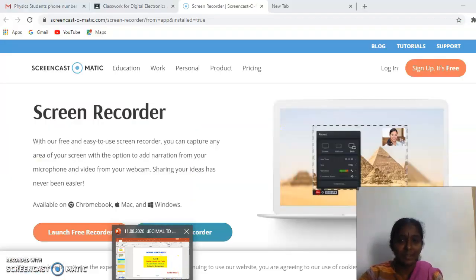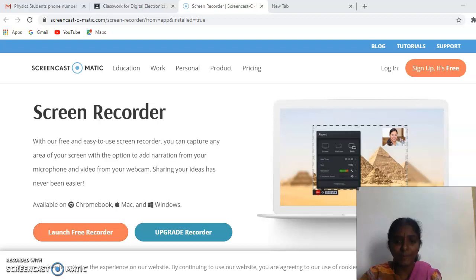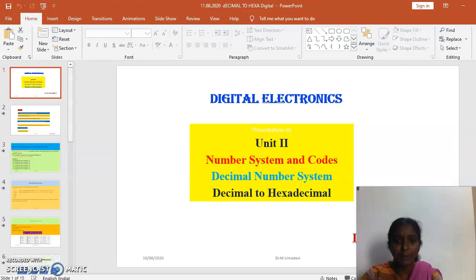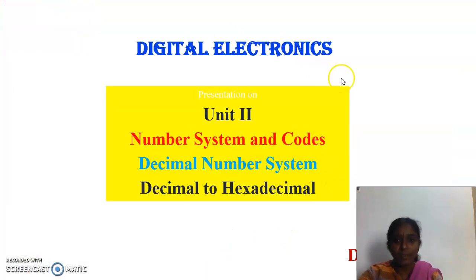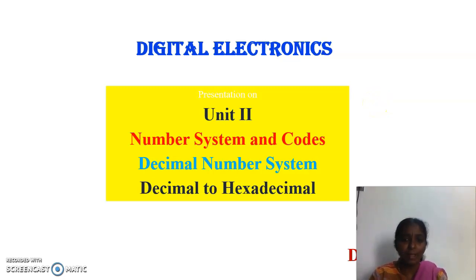Good morning students. Today's class we are going to see the decimal number system. In the decimal number system we are going to see the conversion from decimal to hexadecimal. So far we discussed about decimal to binary, decimal to octal, and now today's class we are going to see in detail about the decimal to hexadecimal conversion.